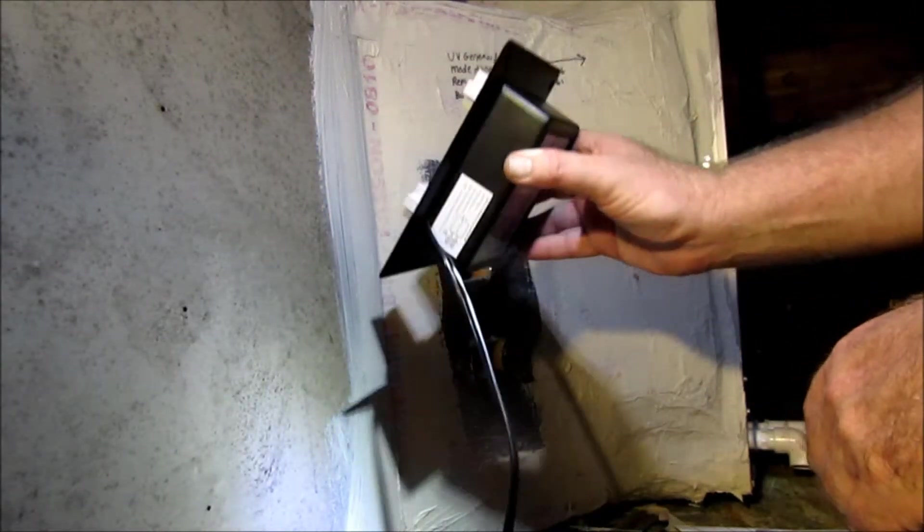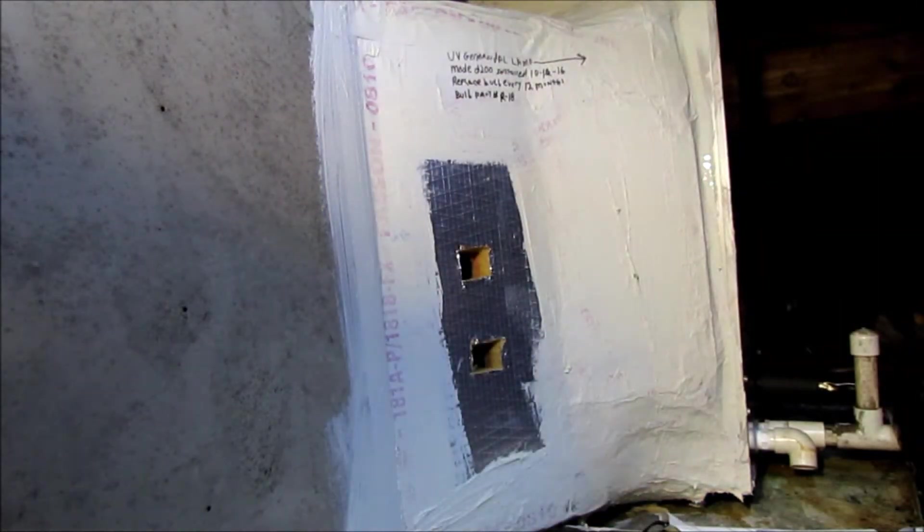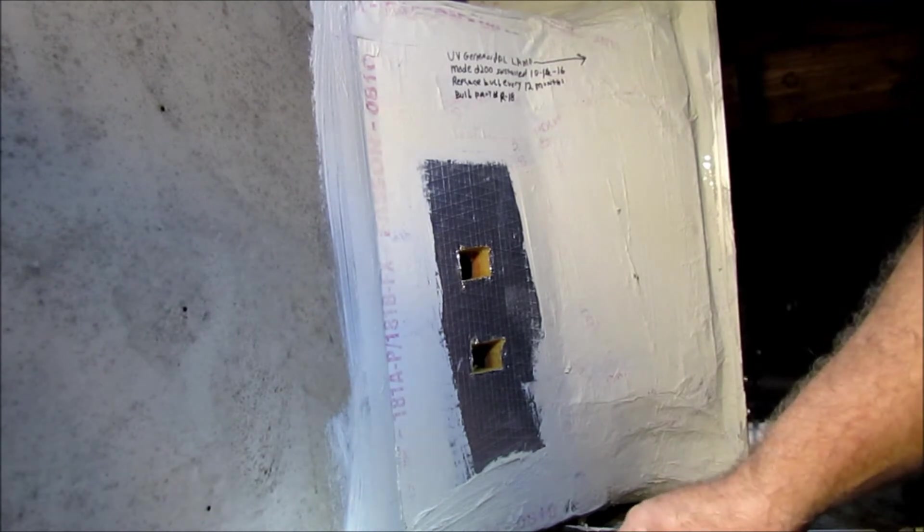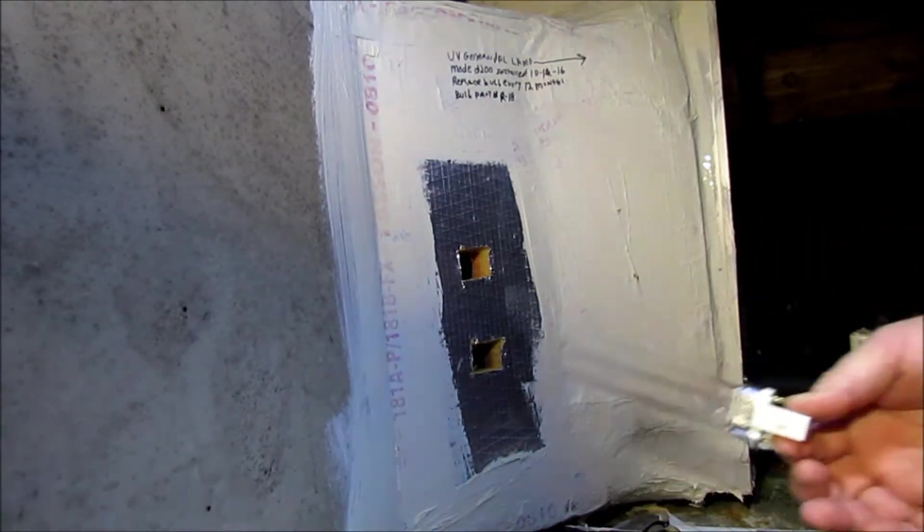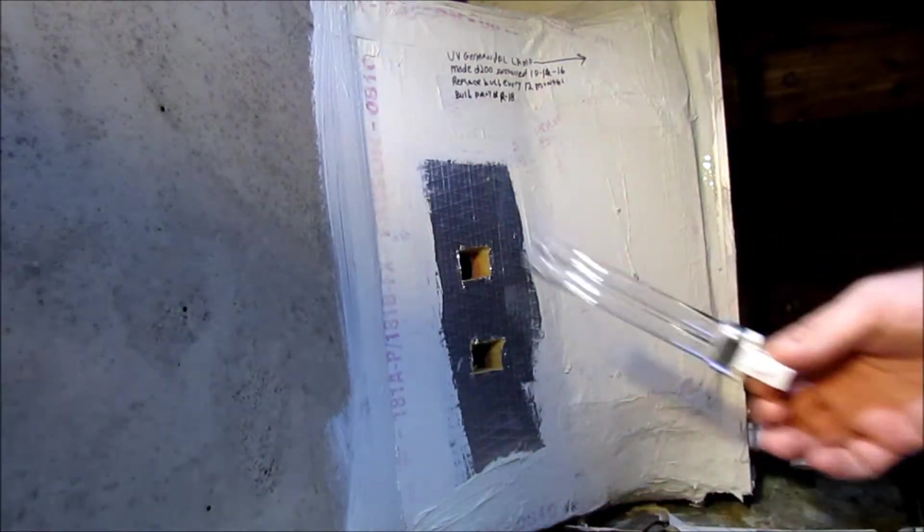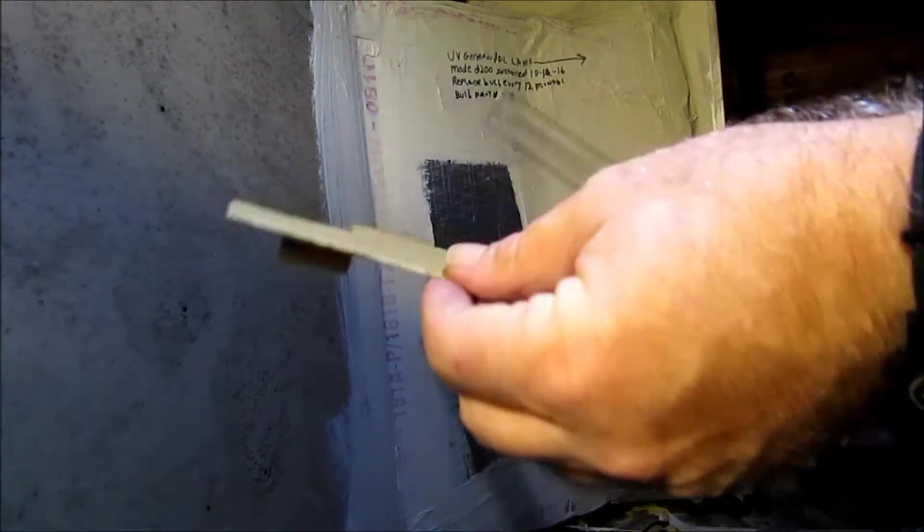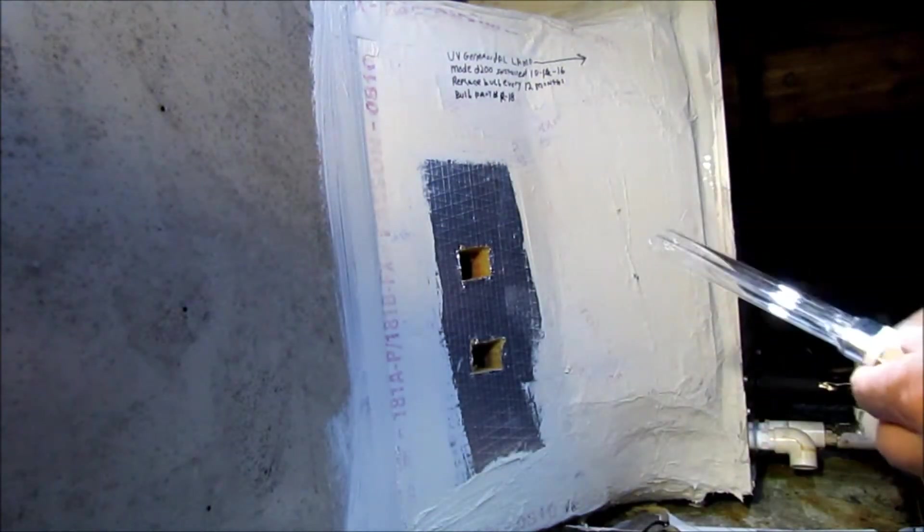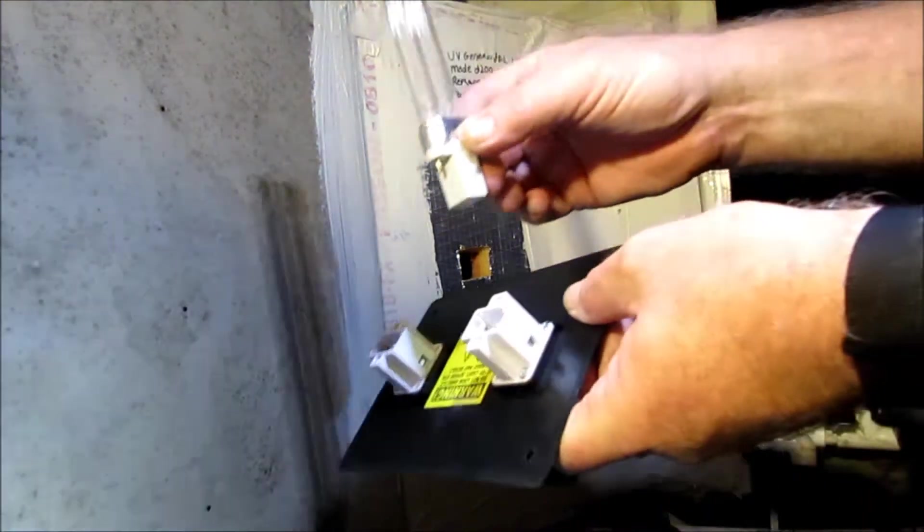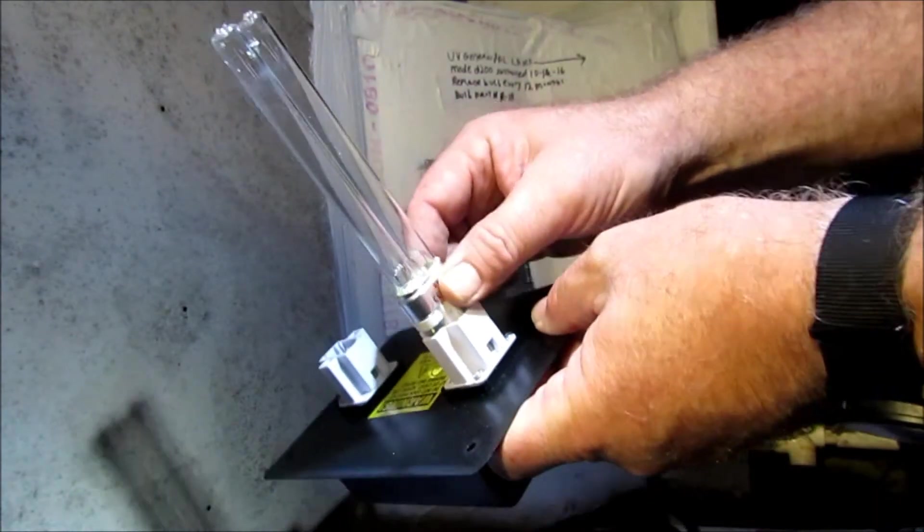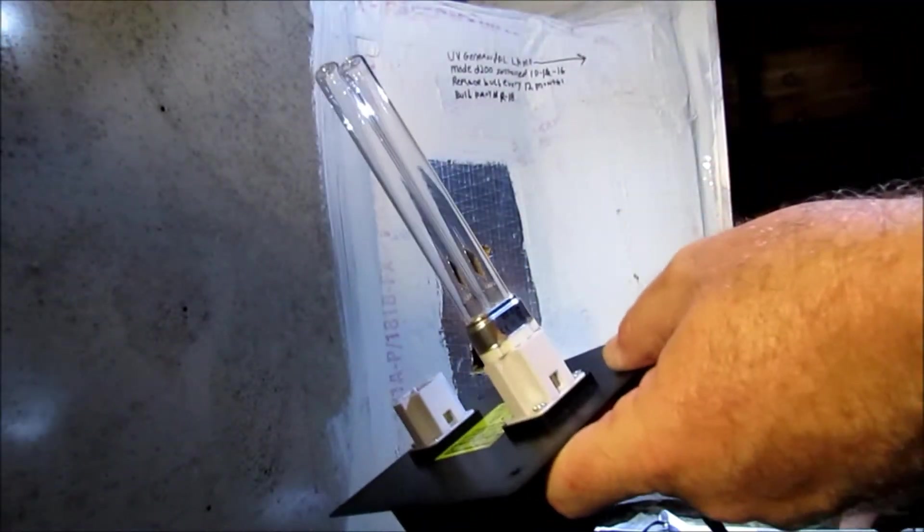So after you know that it's going to fit you then remove the bulbs from the pack. Try not to touch the glass part. This cardboard thing will need to come out of it too. And they just slip in here real easy like that. They'll snap lock.